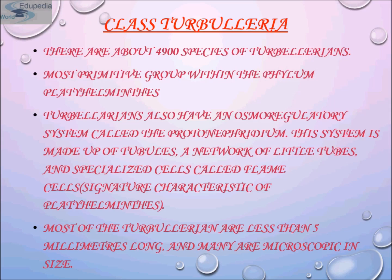Turbularians also have an osmoregulatory system called the protonephridium, a primitive kind of kidney made up of a network of little tubes and specialized cells called flame cells. Most turbularians are less than five millimeters long, and many are microscopic in nature and cannot be seen by the naked eye.